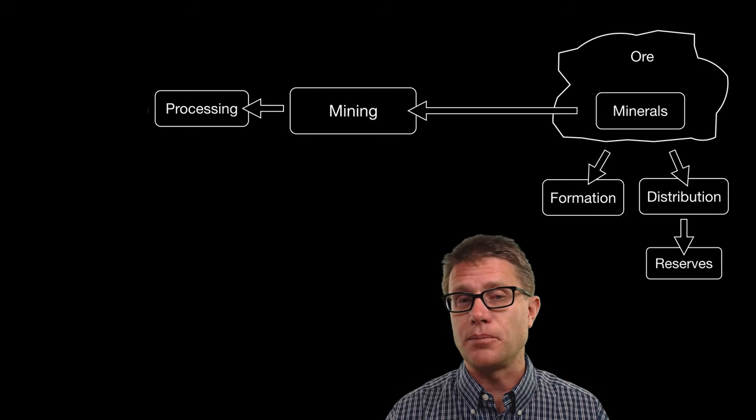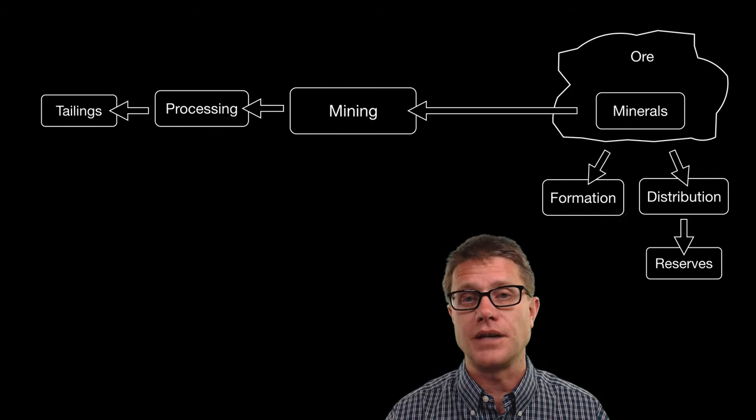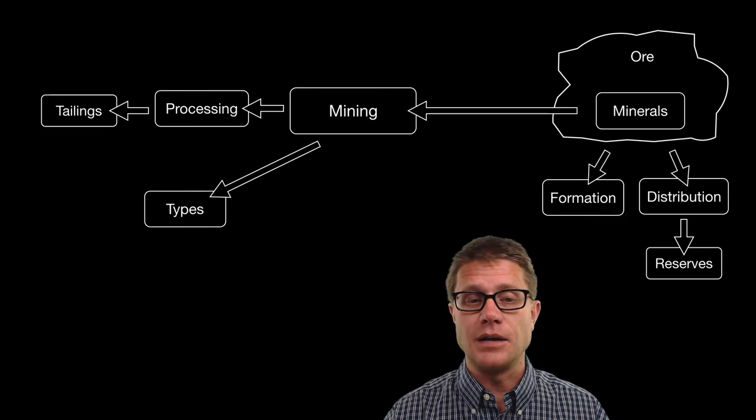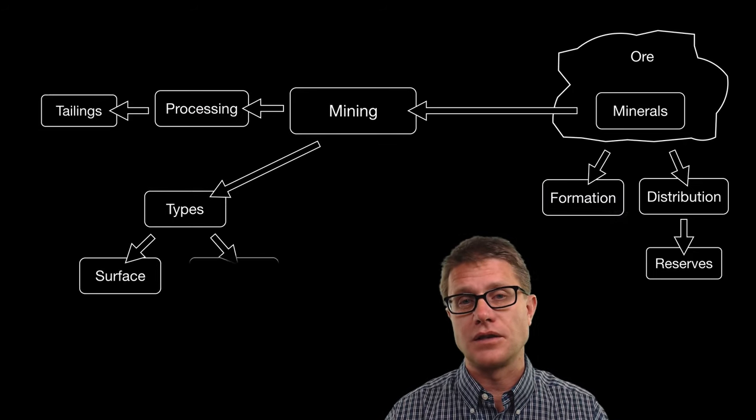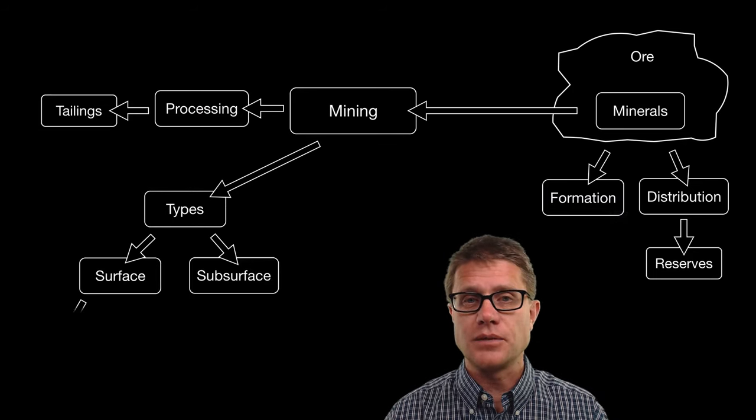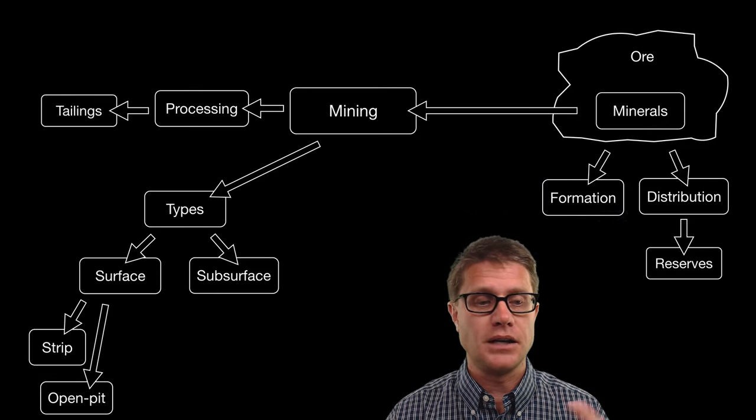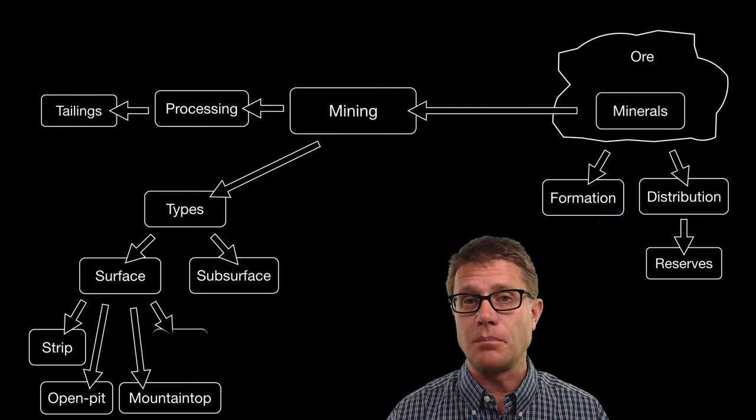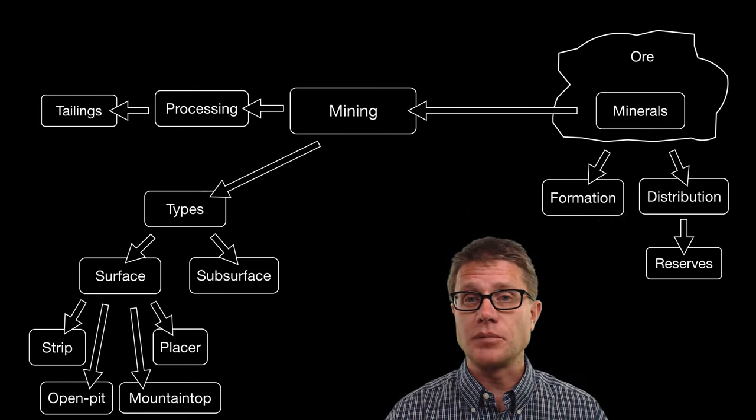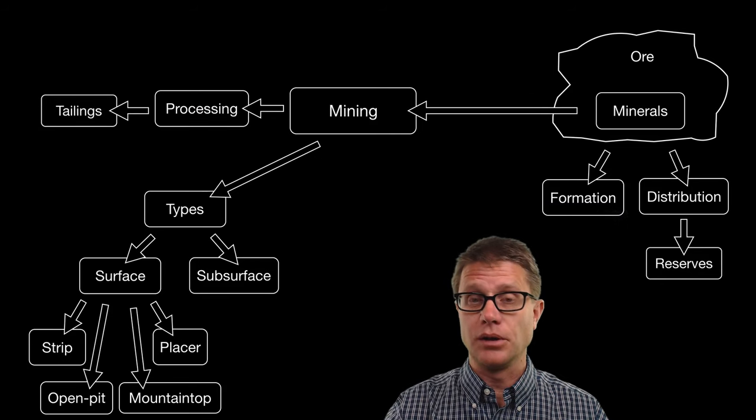What do we do once we have pulled the ore out? We process it and what is left over are called tailings. Now there are a lot of different types of mines. We have what are called surface and subsurface mines. Surface mines could be things like strip mining, open pit mining. We have mountain top mining and placer mining. Subsurface is where we actually dig down below the surface.